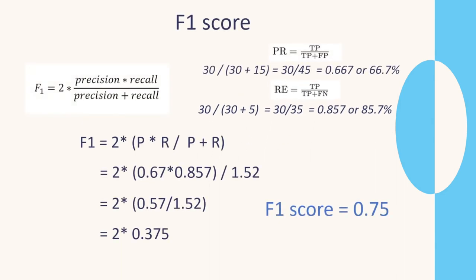Now here we have the equation for the F1 score. We have precision and recall as inputs. We plug in our figures — precision times recall divided by precision plus recall, then multiply by 2 — and in this case we end up with an F1 score of 0.75. So the F1 score is like an average of precision and recall.